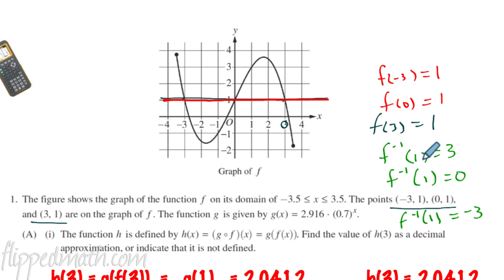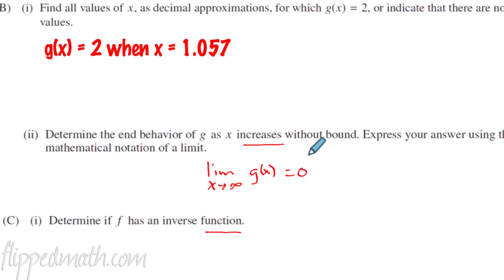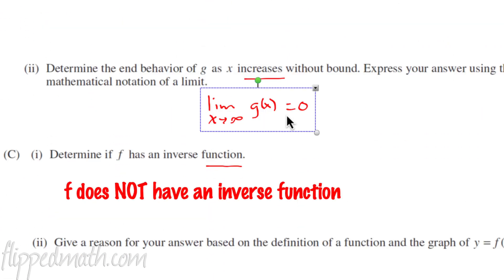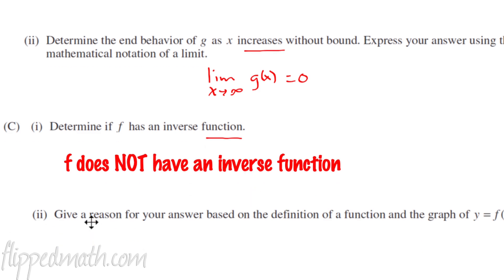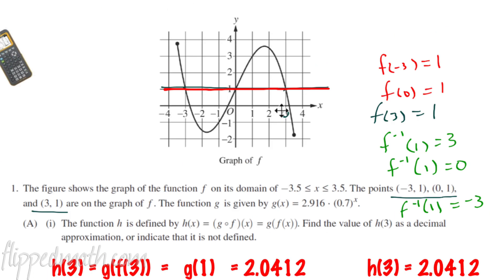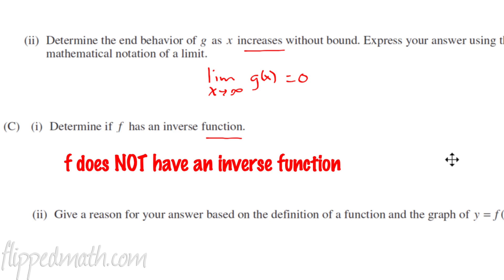So what do they want you to do when you answer this question? You have to say that. First, we say that f does not have an inverse function. It has an inverse, but it's not a function. It's a relation. And then part two says give a reason for your answer. Well, what was our reason up here? We had the inverse has one input with multiple outputs. So let's write that down. Here's how I write it out.